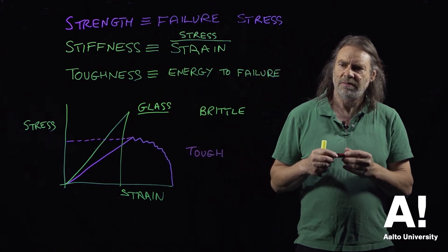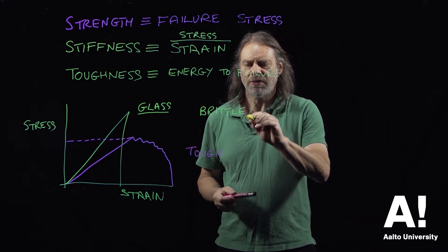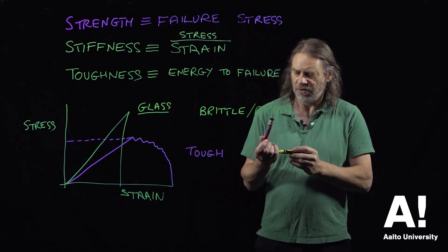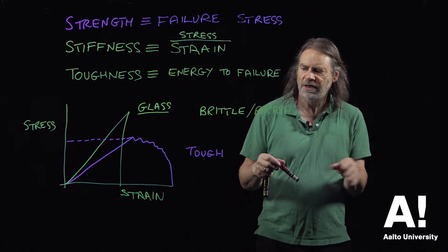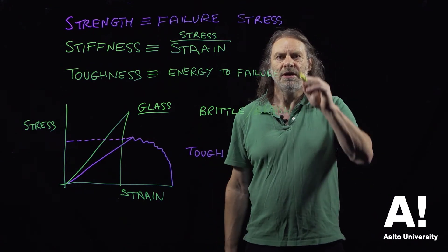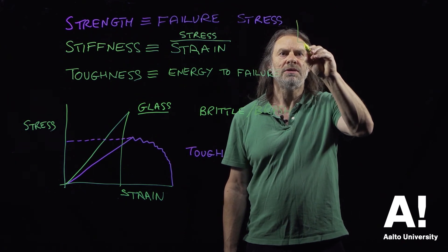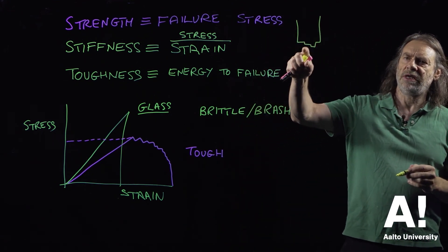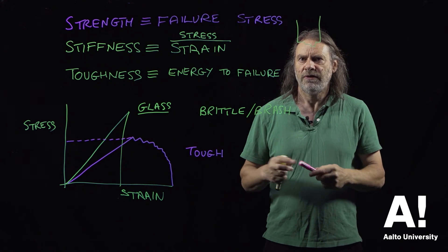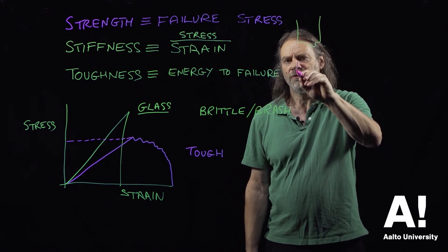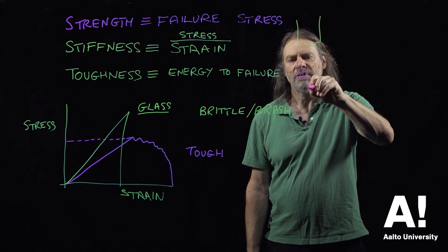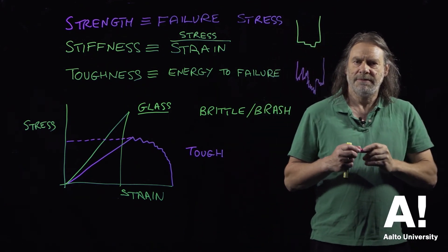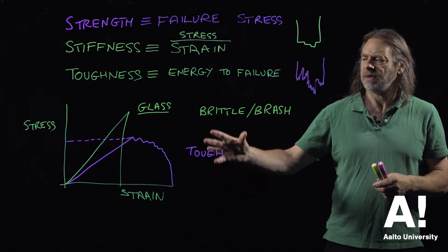The brittle material behaviour is also called brash or brittle failure. If we look at a failure surface after a brittle material has broken, it's characterized by very linear-looking failure surfaces. A tough material would have a failure surface that looks quite different - much more irregular. They're quite different in appearance and quite different in behaviour.